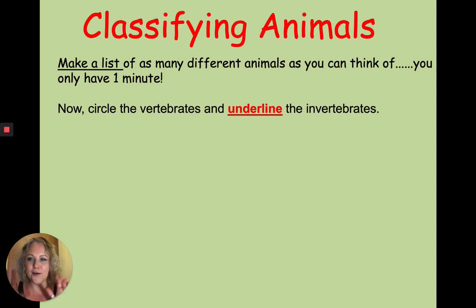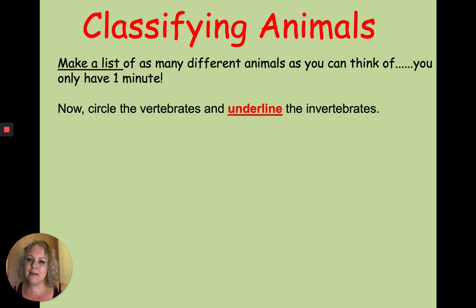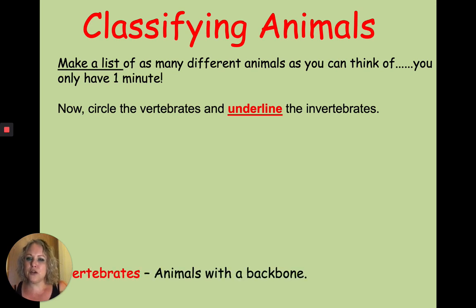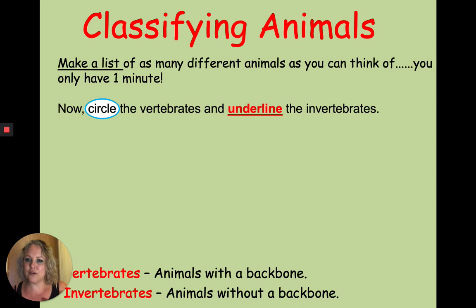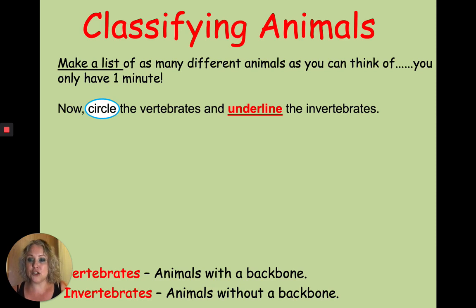Hopefully you had a go. Now I want you to circle the vertebrates and underline the invertebrates. A vertebrate is an animal with a backbone, and an invertebrate is an animal without a backbone. Pause the video and go through your list, then we'll look at how you got on classifying those animals into vertebrates and invertebrates.